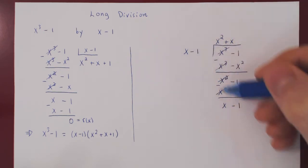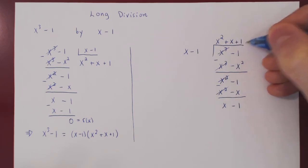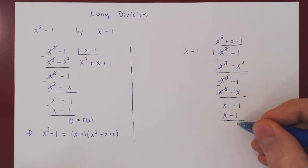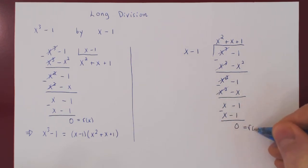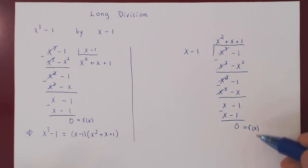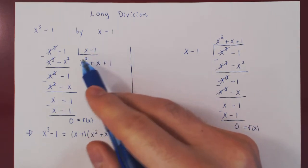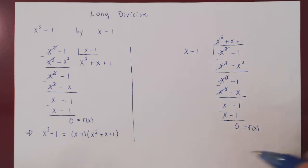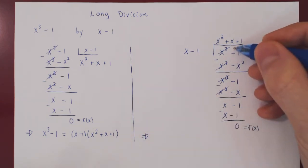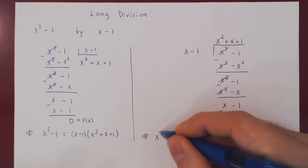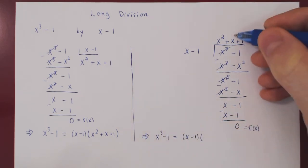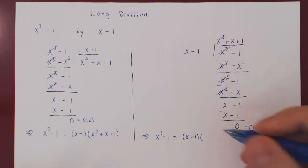We repeat: what times x is x? Plus 1. 1 times x minus 1 gives x minus 1. We subtract and have a remainder of 0. Indeed the polynomial x minus 1 does divide x cubed minus 1, because it is a factor. So we have the same conclusion: x cubed minus 1 equals x minus 1 times x squared plus x plus 1.